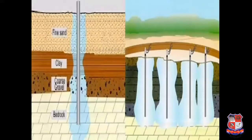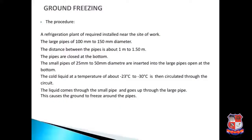The procedure for ground freezing: a refrigeration plant of required capacity is installed near the site. Large pipes of 100 mm to 150 mm diameter are used, spaced about 1 to 1.5 meters apart, closed at the bottom. Small pipes of 25 mm to 50 mm diameter are inserted inside the large pipes, open at the bottom. Cold liquid at a temperature of approximately minus 23°C to minus 30°C is circulated through the circuit — entering through the small pipe and exiting through the large pipe — causing the ground to freeze around the pipes.